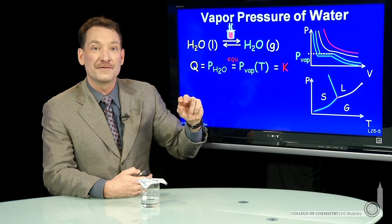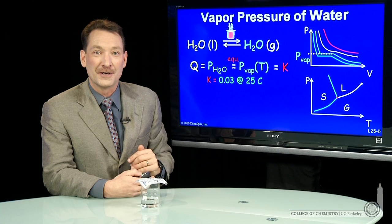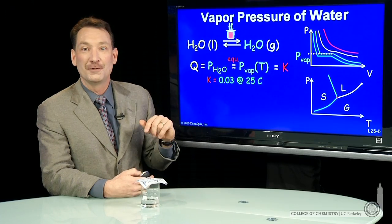The vapor pressure is a function of temperature, and we know K, the equilibrium constant, is a function of temperature. So that makes good sense. Now, let's look at the exact value: 0.03 atmospheres at 25 degrees C is the value of the vapor pressure for water at 25 degrees C. So that's the value of the equilibrium constant for this equilibrium.